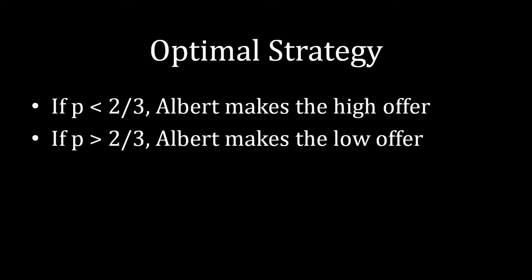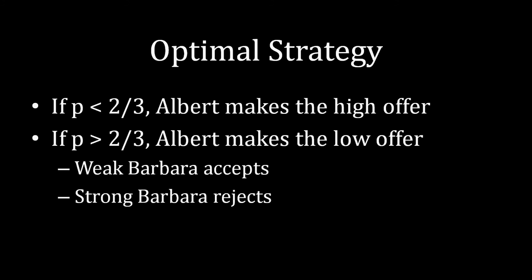On the other hand, when P is greater than two-thirds — in other words, when the probability that Barbara is weak is sufficiently high, again compared to the payoffs in the game tree — something more interesting happens. Albert makes the low offer. The weak type of Barbara accepts, because there's a very high degree of probability that Barbara is weak, and so Albert is tailoring his offer to get the weak type of Barbara to accept. However, the strong type of Barbara is facing a very small offer from Albert, and by virtue of that, she has a better payoff by taking her outside option. So the strong type of Barbara rejects this offer from Albert.